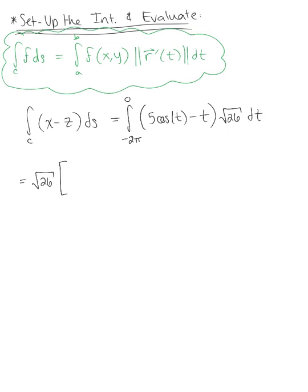So you can pull that square root of 26 out to the front. And then integrating, we have 5 cosine of t integrates to 5 sine of t minus t squared over 2, which we're now ready to evaluate from negative 2 pi to 0.